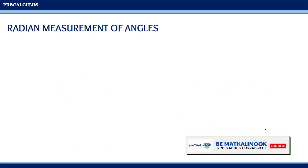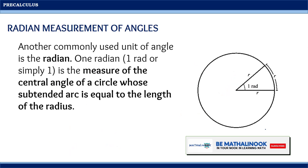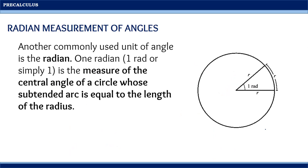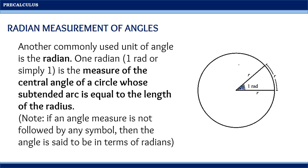Another commonly used unit of angle is the radian. One radian, or one rad, is the measure of the central angle of a circle whose subtended arc is equal to the length of the radius. In this illustration, the central angle is subtended by an arc and two radii. Note that if an angle measure is not followed by any symbol, then the angle is said to be in terms of radians.